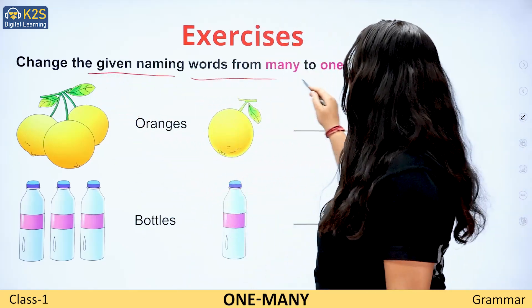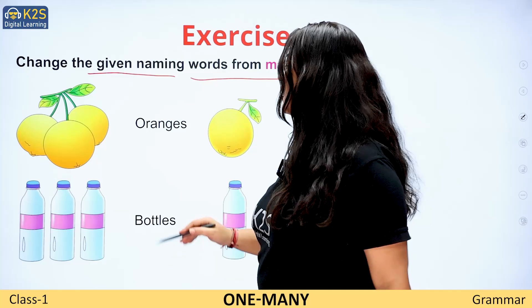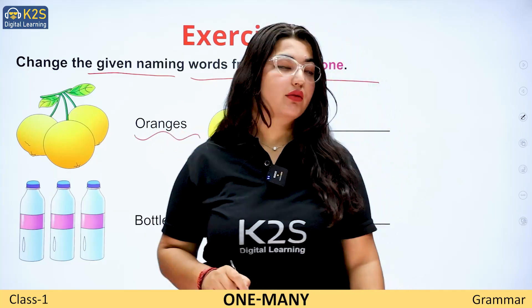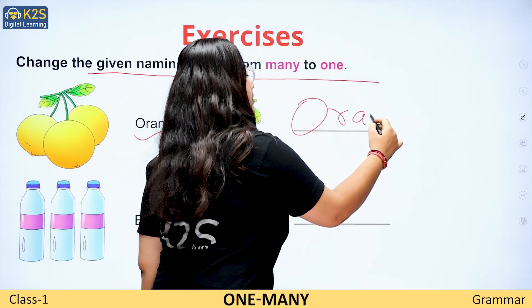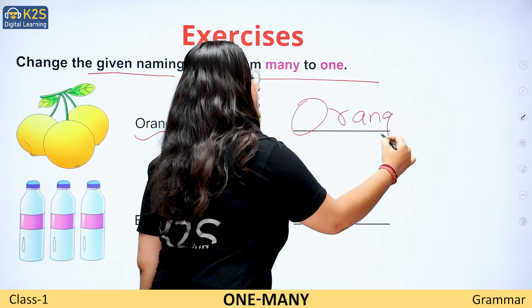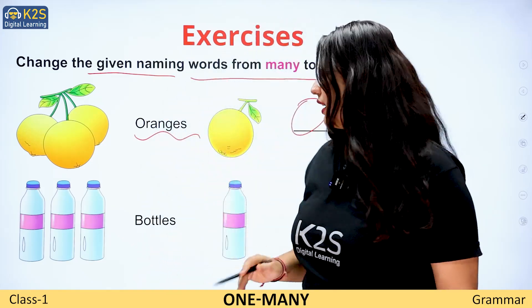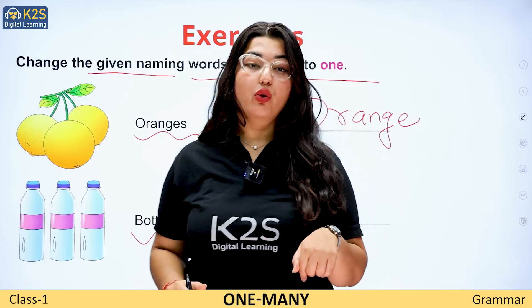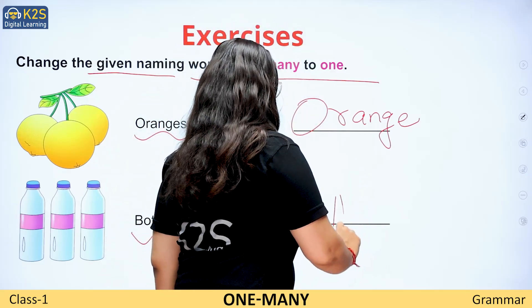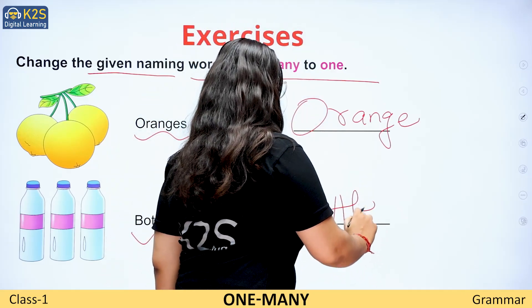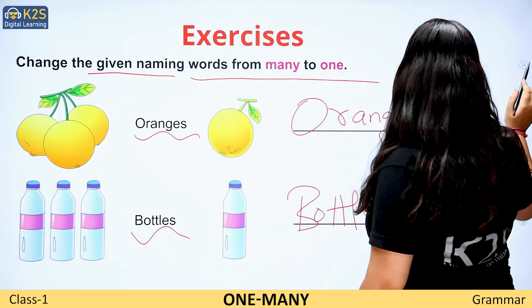Change the given naming word from many to one. Oranges — so what do I write here? Orange. Bottles — bottle. Moving to the next section.